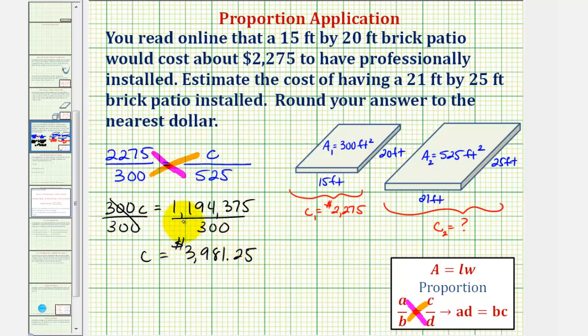We do have to be careful here because we're told to round the answer to the nearest dollar, so we don't want to leave it in this form. The two in the tenths place value indicates to round down, so we'll round this down to $3,981. So the estimated cost is, again, $3,981.